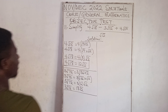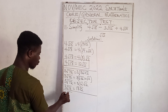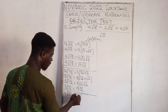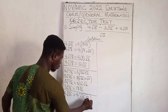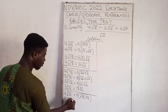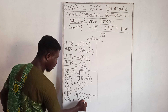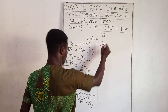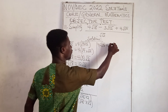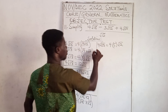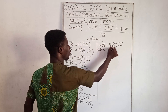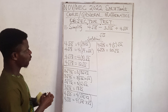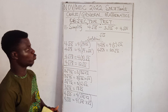Now for 4√50: two numbers multiplying to give 50 where one is a perfect square — we have 25×2. So 4√50 equals 4 times √25 times √2. √25 gives 5, so we have 4 times 5 times √2, which equals 20√2. In simplest form, 4√50 = 20√2.